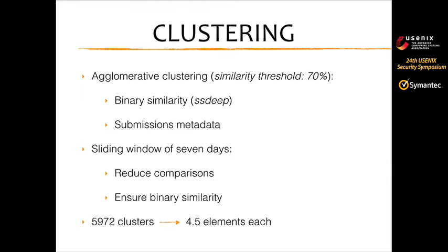The second step is the clustering part. The main goal is to group together all samples related to possible malware development. For this goal, we use agglomerative clustering based on binary similarity and submission metadata. For binary similarity, we use a tool like SSDEEP implementing fuzzy hashing techniques. For submission metadata, we mainly rely on submission time to extract the submission timeline. To reduce comparisons, we use a sliding window of seven days and a fuzzy hashing similarity threshold of 70%, which prior research has shown minimizes false positives.